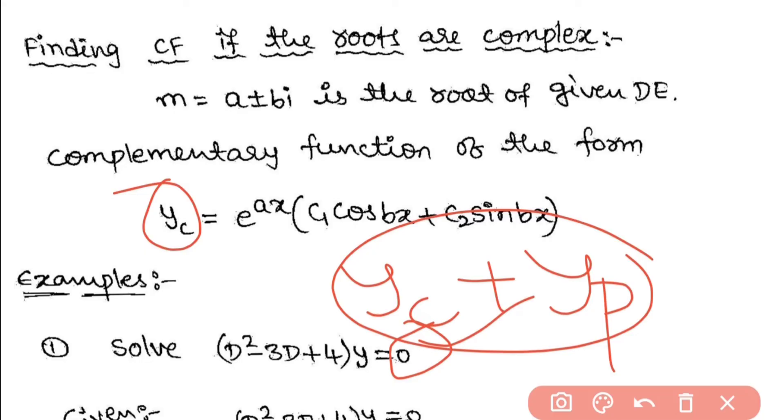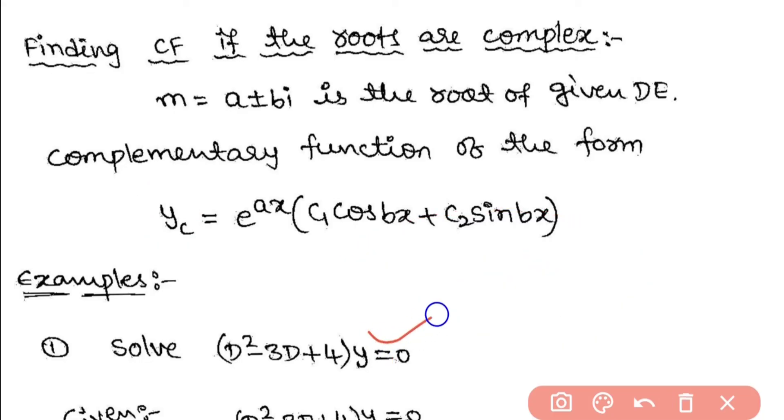So it has a CF or yc. This is a homogeneous differential equation. Example: solve (D² - 3D + 4)y = 0. Here D means capital D, d/dx.